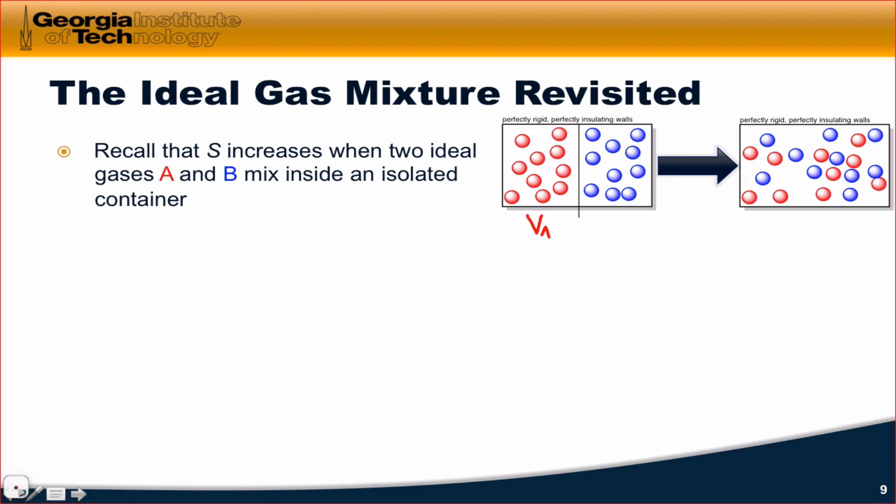We can imagine initial volumes of V sub A for the red gas and V sub B for the blue gas, and a final volume of V sub A plus V sub B. We can imagine this mixing process as two individual expansions. These are ideal gases, so to some extent, the red gas doesn't know the blue gas is even there, and vice versa. So we can imagine the red gas expanding from VA to VA plus VB, and the blue gas expanding from VB to VA plus VB.